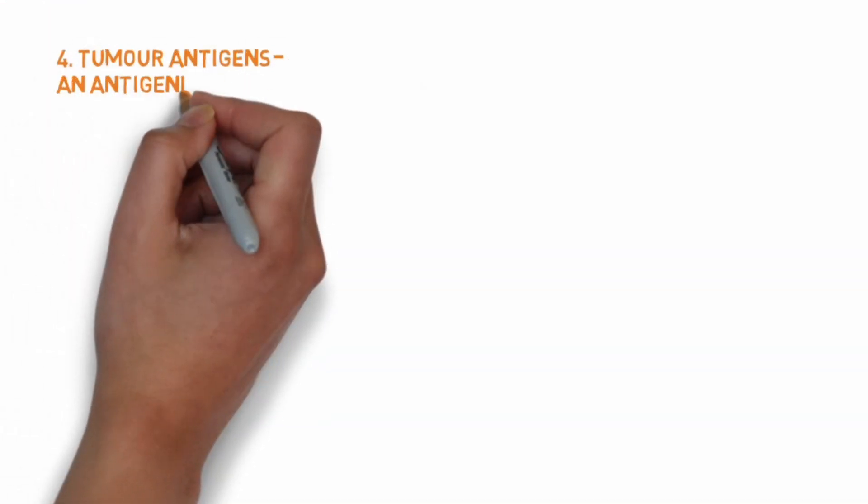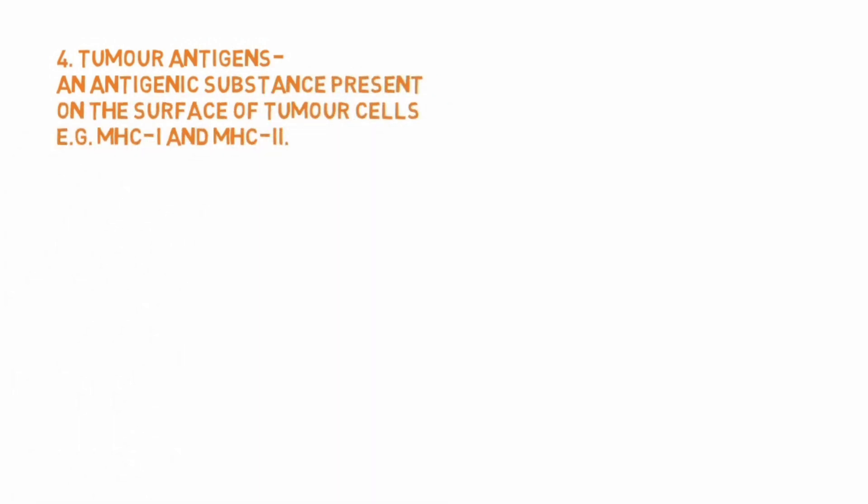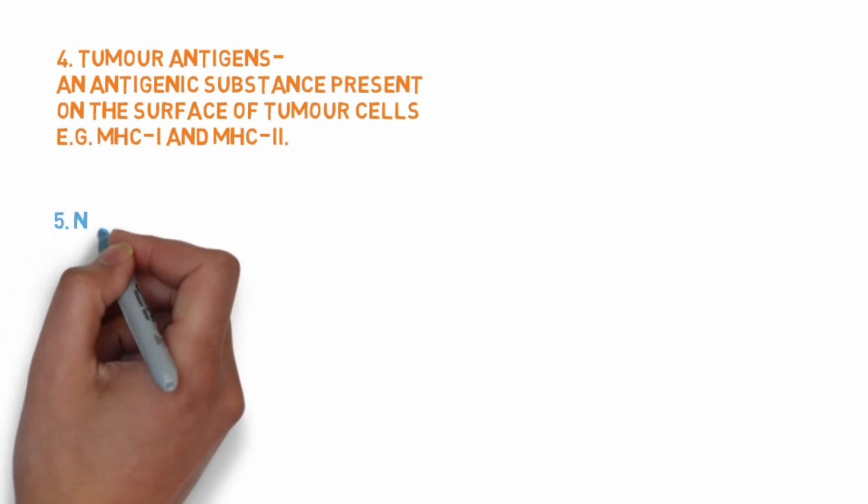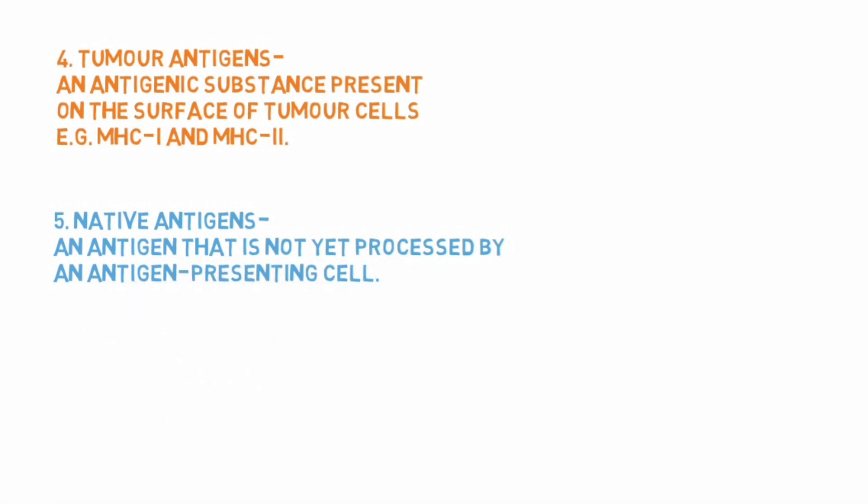Number four: Tumor antigens. Antigenic substances that are present on the surface of tumor cells are tumor antigens, for example MHC-1 and MHC-2. MHC is major histocompatibility complex. Number five: Native antigens. An antigen that is not yet processed by an antigen presenting cell is called a native antigen.